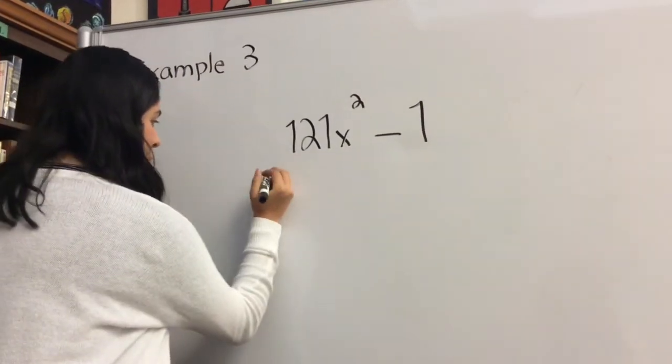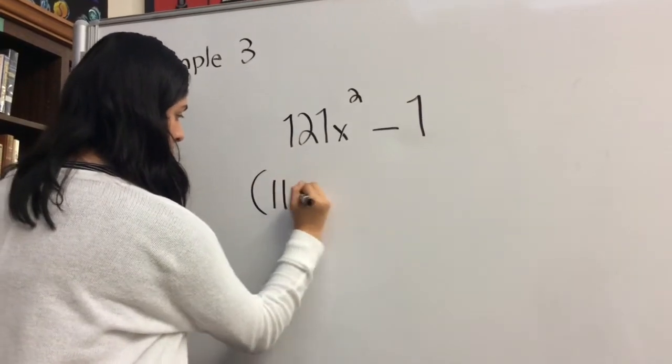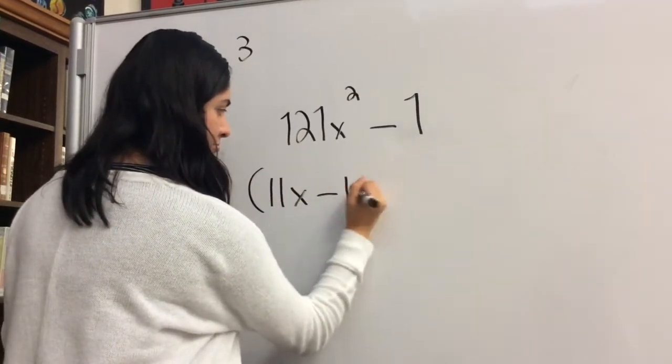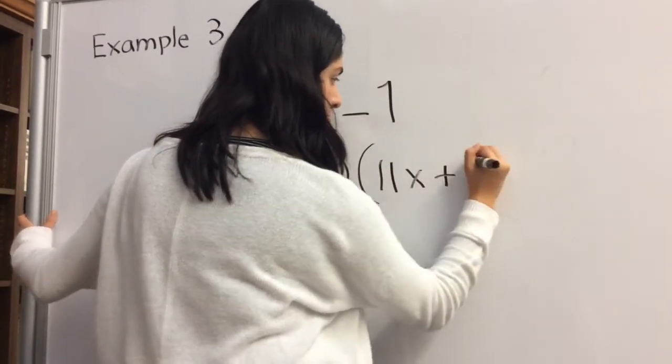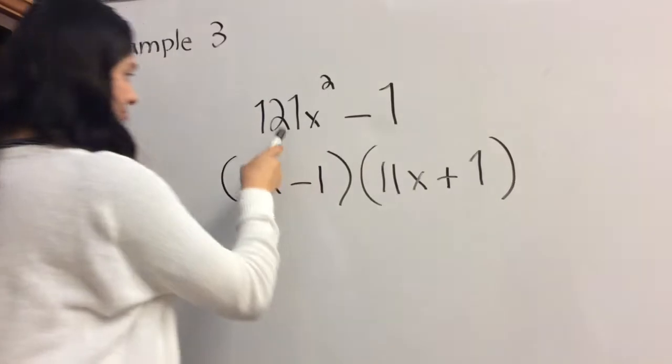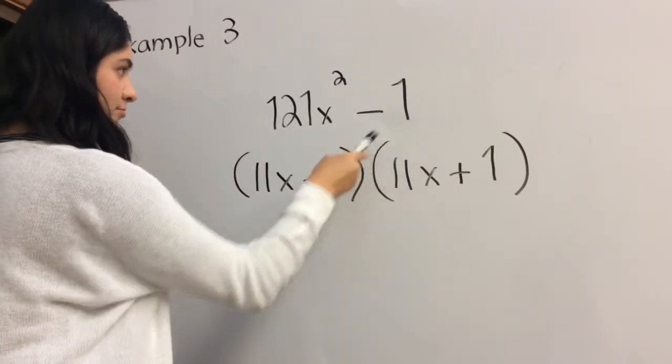What we would do is factor out an 11x from the 121x², and then we would also factor out a 1 from the 1. This would be your final answer. Thank you for the video.